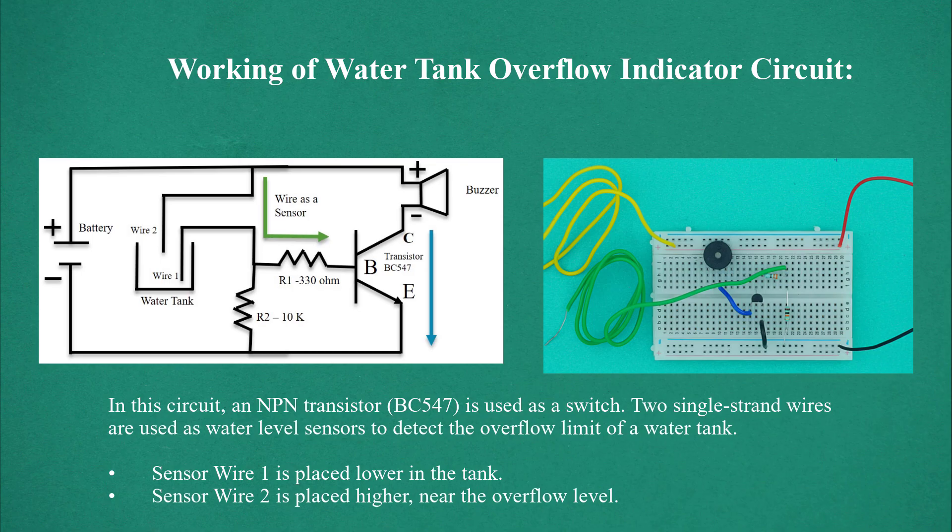Sensor wire 1 is placed lower in the tank. Sensor wire 2 is placed higher, near the overflow level.